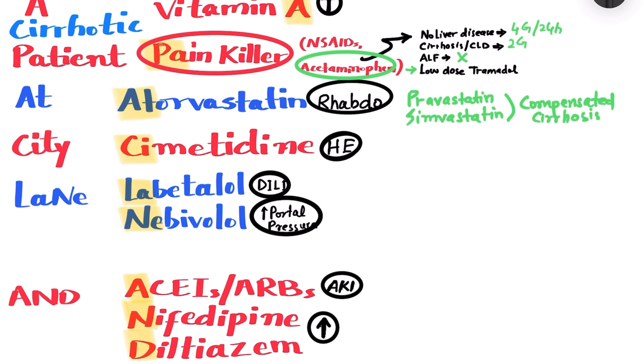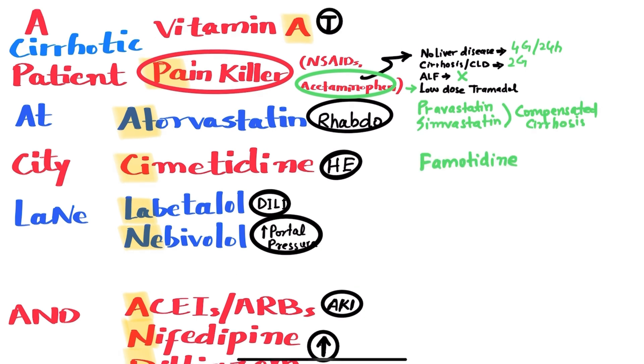From City, it is cimetidine, an H2 blocker. It should be avoided as it has been associated with hepatic encephalopathy. An alternative H2 blocker that can be used is famotidine, which does not require any dosage adjustment unless the patient has concomitant renal failure.